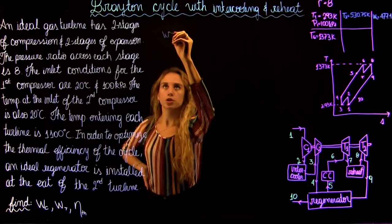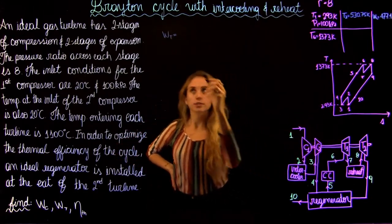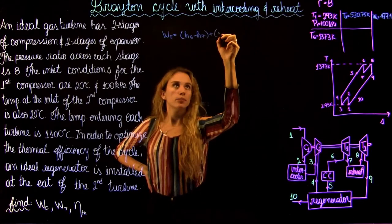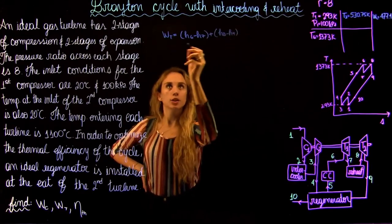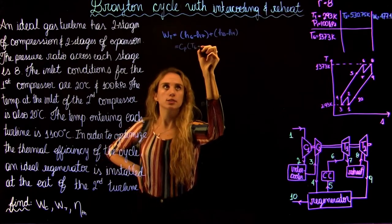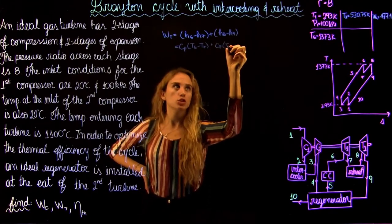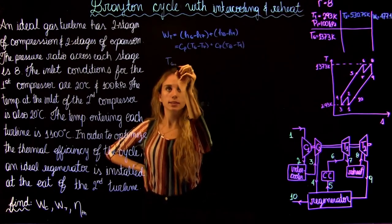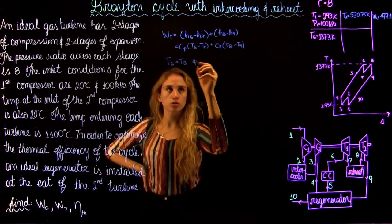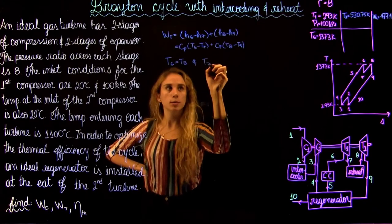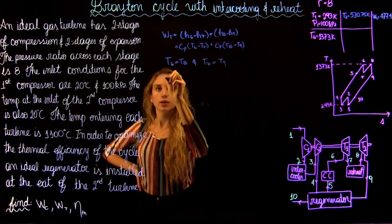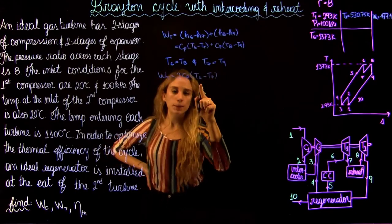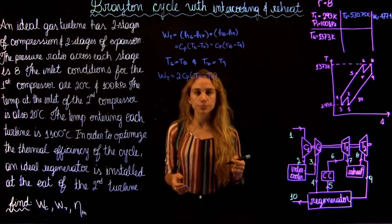Now let's write the equation for the work of the turbine using the same logic. The turbine work in terms of enthalpy is H6 - H7 plus H8 - H9. In terms of temperature, it's Cp(T6 - T7) plus Cp(T8 - T9). Since the inlet temperatures are the same — T6 equals T8 — and the pressure ratios are equal, T7 equals T9. So we rewrite it as 2·Cp·(T6 - T7). T6 is given; we use the isentropic equation to find T7.